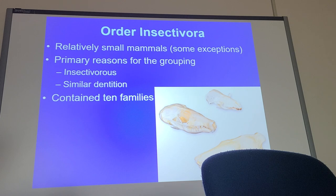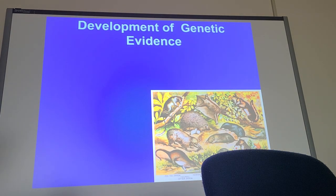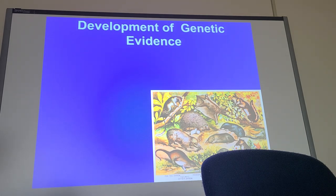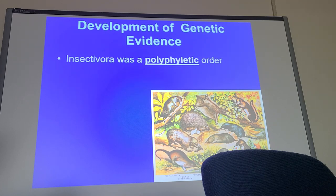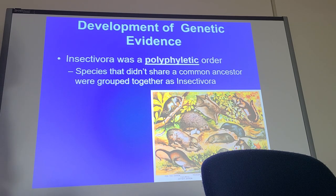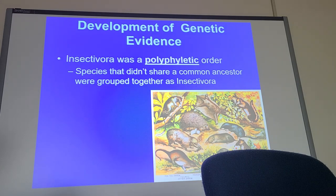This group originally contained ten families and was based on behavioral and morphological similarities. We've gotten away from that now — the ultimate clue is genetic information. When you look at this group genetically, you find it was a polyphyletic order, meaning these were different evolutionary lines that didn't share a common ancestor. So they were thrown together but didn't belong together. As a result, Insectivora was abolished.